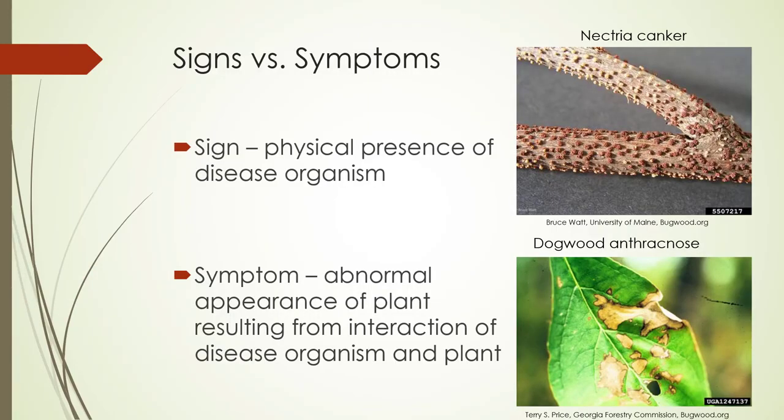Signs versus symptoms. Signs are the physical presence of a disease organism. In this case, we've got nectria canker, and the fruiting bodies on the stem are the sign of the disease. A symptom is the result of an interaction of a disease organism and the plant. Here we have dogwood anthracnose, and the leaf has actually changed form because of the disease.